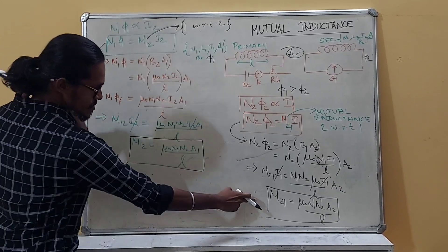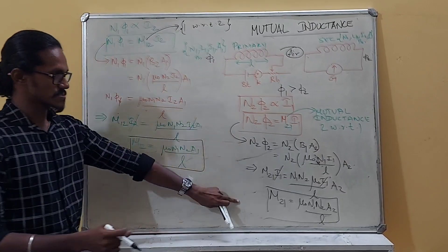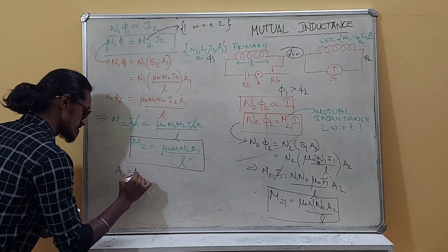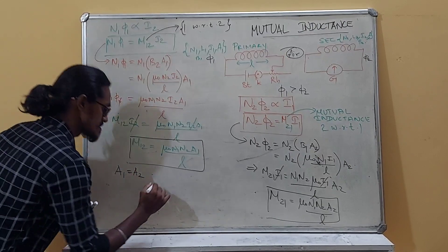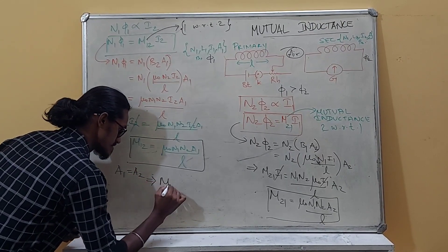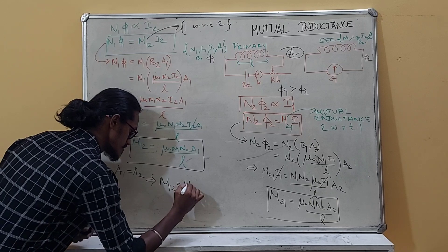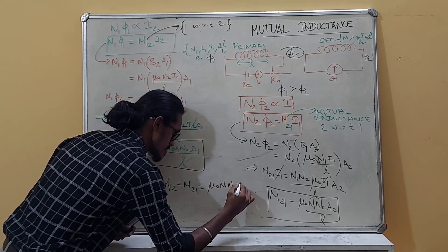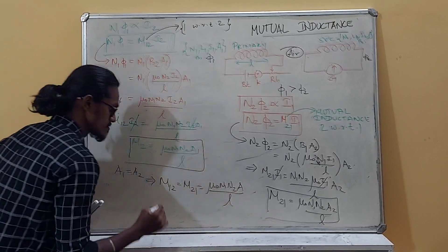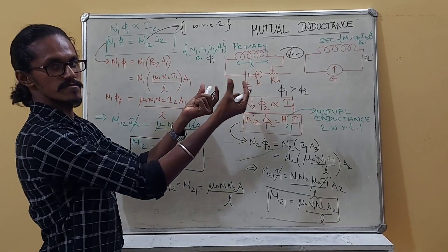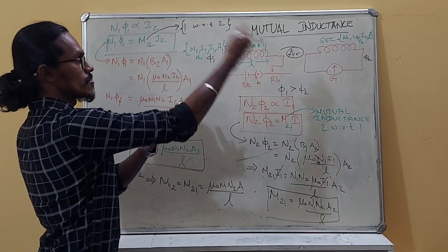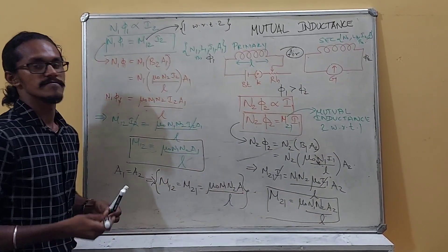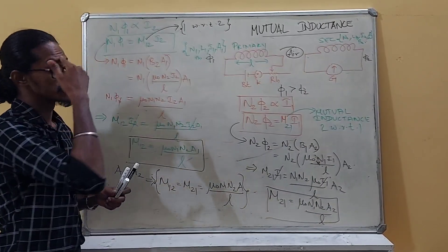Observing these two equations, if the areas of both solenoids are equal, then M₁₂ = M₂₁ = μ₀N₁N₂A/l. This means induction is mutual: solenoid 1 induces solenoid 2 and solenoid 2 also induces solenoid 1.